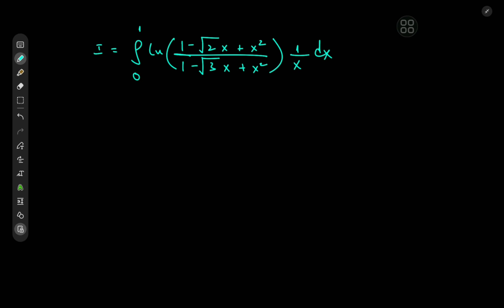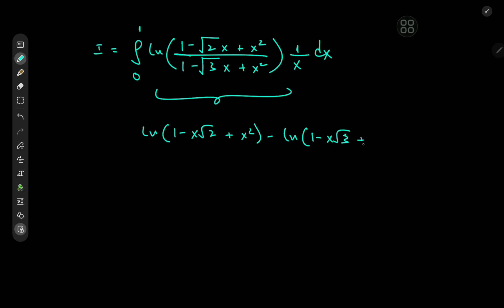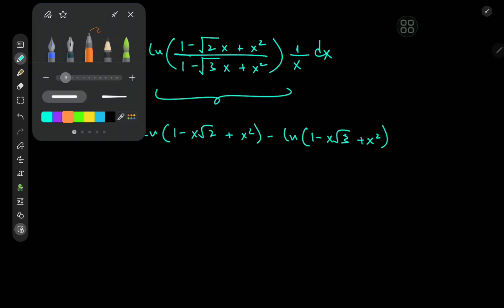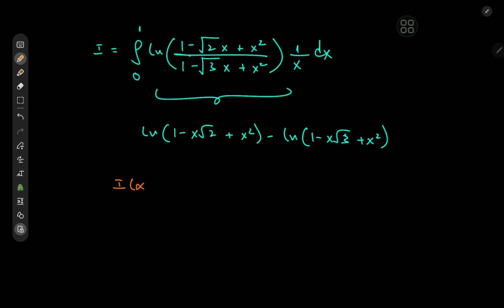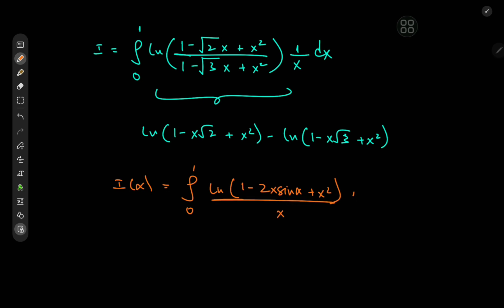We're going to apply Feynman's trick to solve the integral, but the parameterization is going to be a bit different from the usual. Because we're dealing with logarithms we can treat this as a difference of logarithms: log(1 minus x root 2 plus x squared) minus log(1 minus x root 3 plus x squared). So we define I(α) as the integral from 0 to 1 of log(1 minus 2 sine(α) times x plus x squared) divided by x, dx.